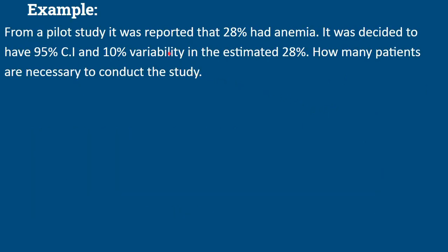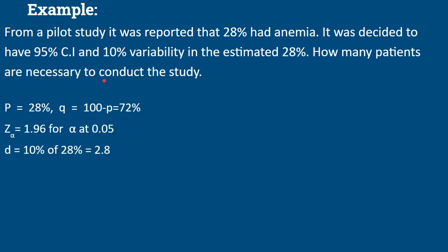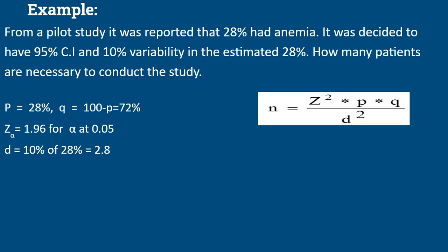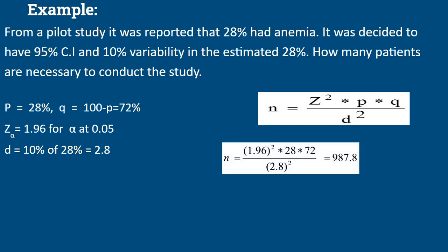Here is one example. From a pilot study, it was reported that 28% had anemia. It was decided to have a 95% confidence interval and 10% variability in the estimated 28%. So what is given is prevalence 28%, q is 100 minus p which yields 72%, z-alpha is 1.96 for alpha at 0.05, and d is 10% of 28% which is 2.8%, because it is given as 10% relative variability in the estimated 28%. Substituting the values into N = Z²PQ/D² gives 987.8 as the required sample size.